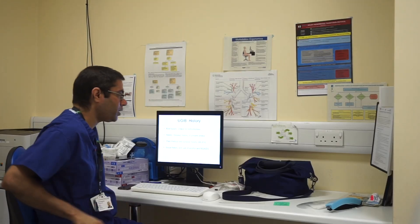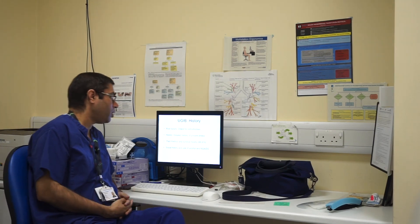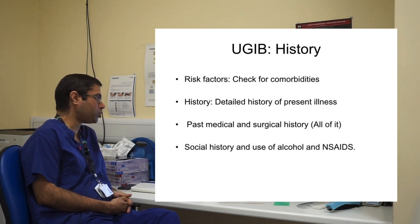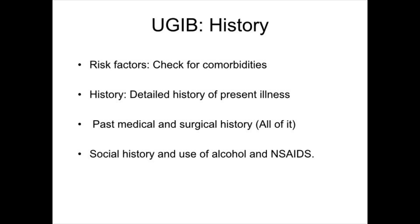Coming to that, bearing in mind the causes you have seen, it is very important to take a full history from these patients. Detailed history will guide you to the differential diagnosis. Past medical history and surgical history are also important, particularly if the patient has had surgical interventions either recently or in the past, as these can present with upper GI bleed. Social history, particularly alcohol use and NSAID use, is again very important.